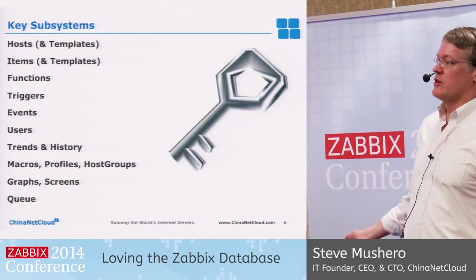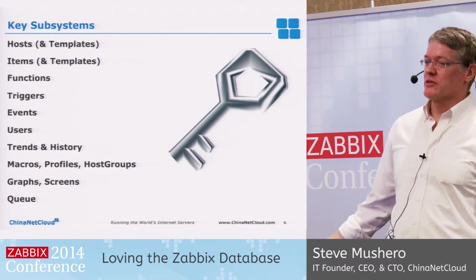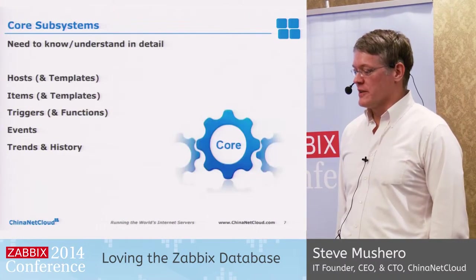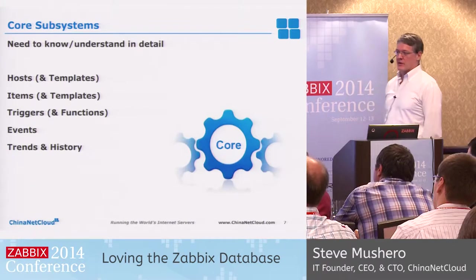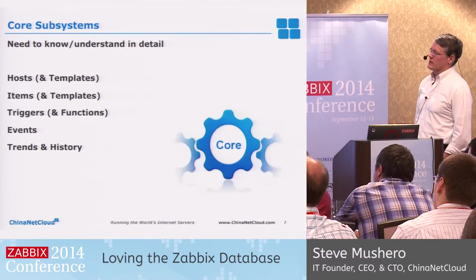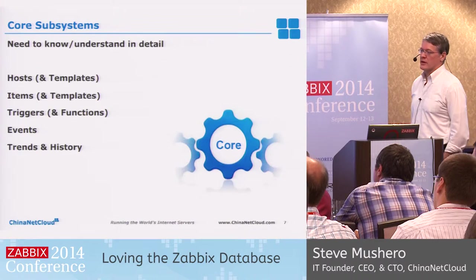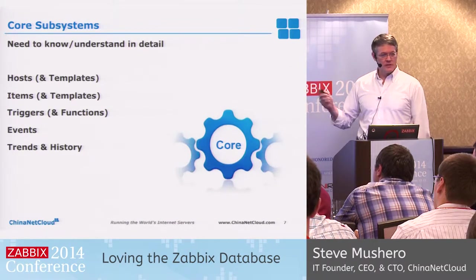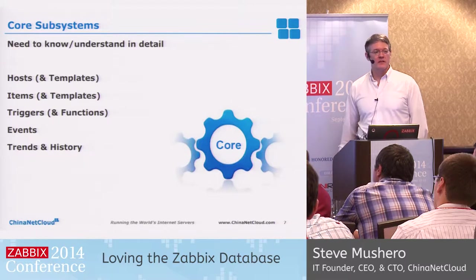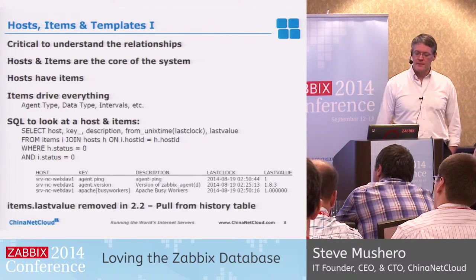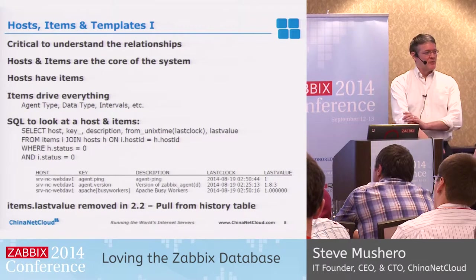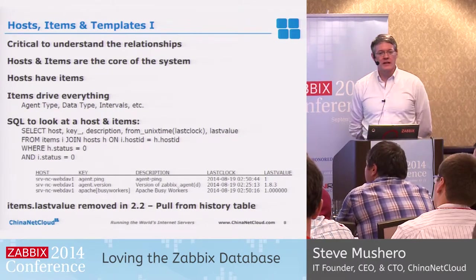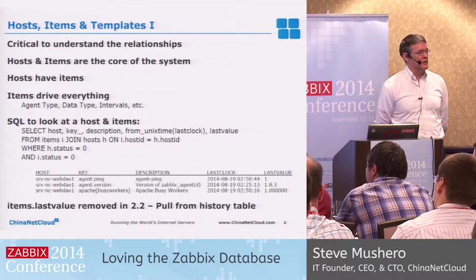These are the key subsystems, as you know from your menus — there's hosts, items, and all that. They all have tables, very conveniently. The core systems I want to talk about are obviously hosts, templates, items, and so on. You can download this PowerPoint; I have pieces for all kinds of other things — all the audits, everything except macros, I think. A key thing to understand is how the hosts, items, and templates work together if you're working in the database.